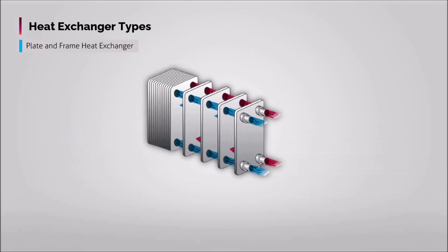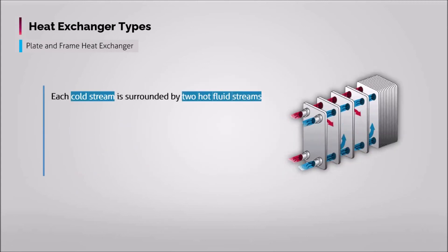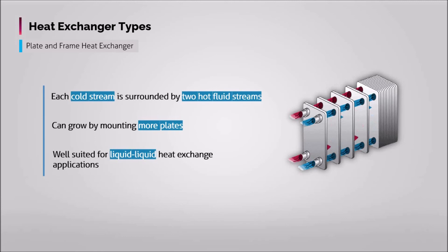Plate and frame exchangers, also called plated exchangers, consist of a series of plates with corrugated flat flow passages. The hot and cold fluids flow in alternate passages, so each cold fluid stream is surrounded by two hot fluid streams, resulting in very effective heat transfer. Plated exchangers can also expand with increasing demand by simply mounting more plates, and they are well suited for liquid-to-liquid exchange when the hot and cold fluid streams are at about the same pressure.